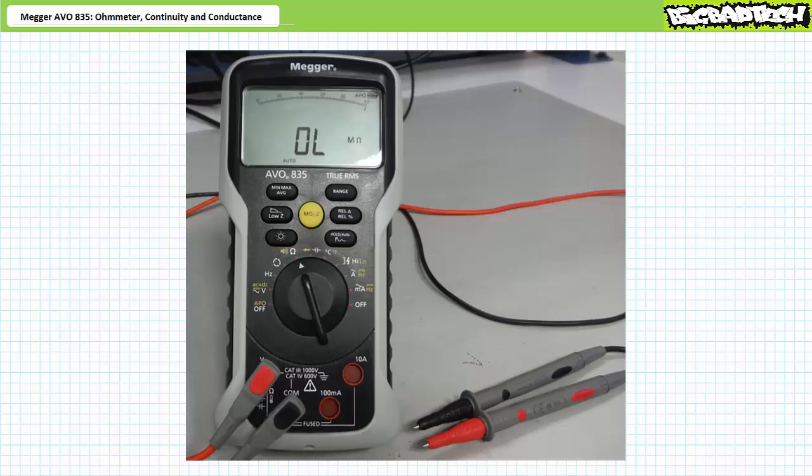The element under test must be depowered and isolated from the system. In the current configuration, the DMM displays OL, which is shorthand for over-limit, indicating the resistance between the two probes is too great to be measured, which implies an open circuit. This is the DMM's way of telling us there is no conductive path between the two probes.